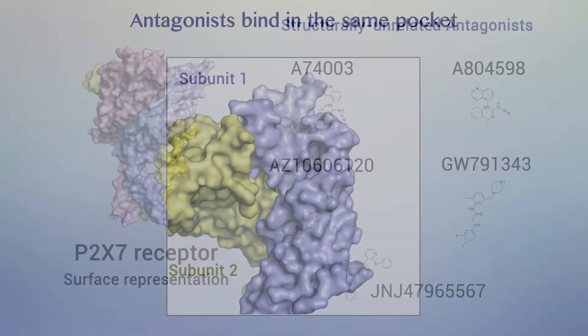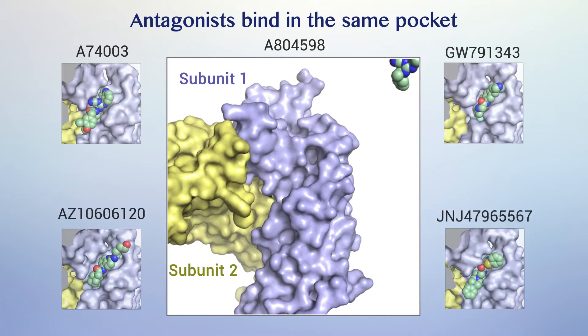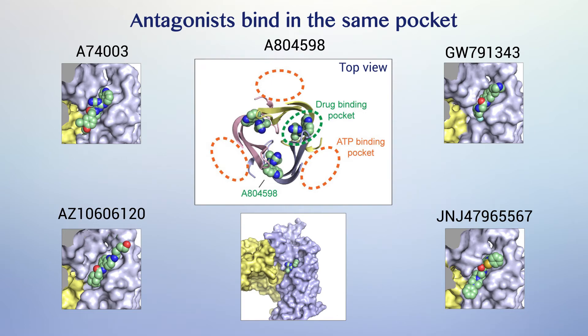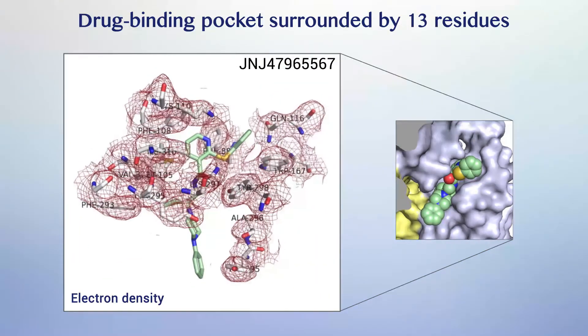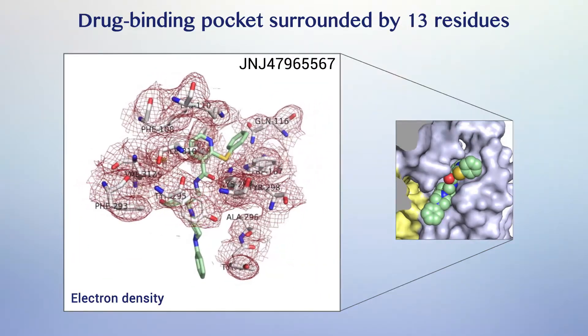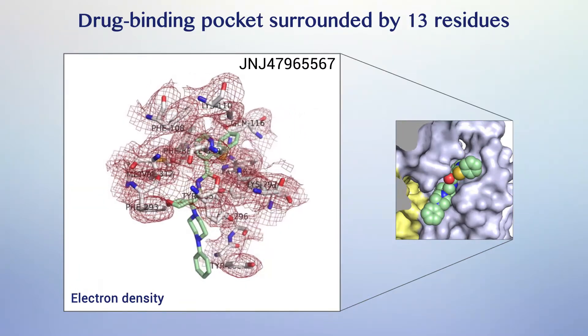To our surprise, all antagonists bind in the same pocket formed between neighboring subunits, which is juxtaposed with the ATP binding pocket. This novel drug binding pocket is surrounded by 13 residues projecting mainly from beta strands in the upper body domains of the neighboring subunits.